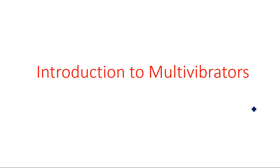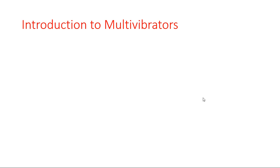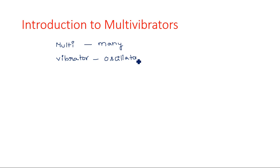In this video, you are going to learn about the introduction of multivibrators. A multivibrator is also an oscillator. If you separate the word, it consists of 'multi' and 'vibrator' — multi means many, vibrator means oscillator. The circuit which produces many continuous oscillations is nothing but a multivibrator.